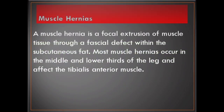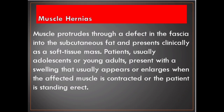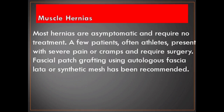Muscle hernia is a focal extrusion of muscle tissue through a fascial defect within the subcutaneous fat. Most muscle hernias occur in the middle and lower thirds of the leg and affect the tibialis anterior muscle. They can be either constitutional or secondary to local blunt trauma. Weakness in the overlying fascia due to perforating vessels and nerves, chronic compartment syndrome, occupational and sporting activities and trauma have been implicated as causes. Patients, usually adolescents or young adults, present with a swelling that appears or enlarges when the affected muscle is contracted or the patient is standing erect. Most hernias are asymptomatic and require no treatment, though a few patients — often athletes — present with severe pain or cramps and require surgery.